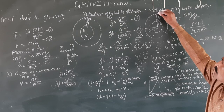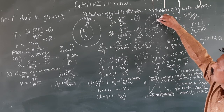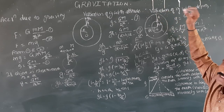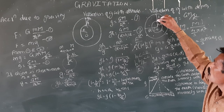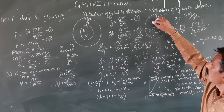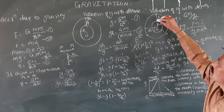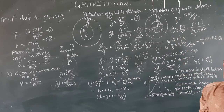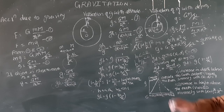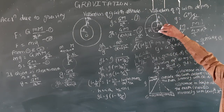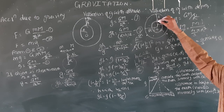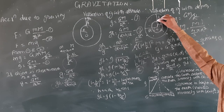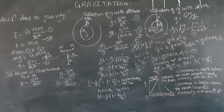If the body is placed at a depth d from the surface of the earth, then the net force acting on the body is due to the material lying in the sphere of radius R minus d. A gravitational force is acting on the body. The acceleration due to gravity at depth is related to GM upon R square.